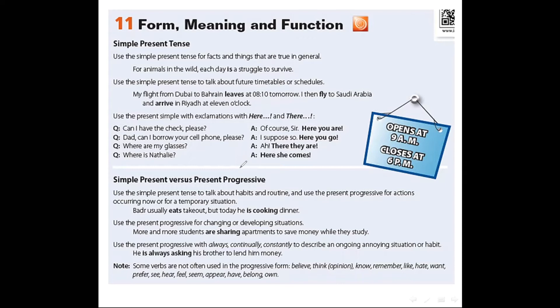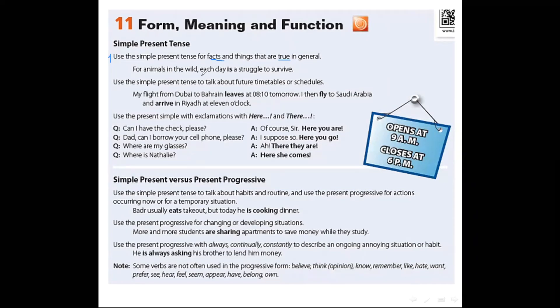Let's start with simple present tense. We use simple present tense for facts and things that are true in general. This is the first use of the simple present tense for facts or real or true in general. For example, for animals in the wild each day is a struggle to survive. Here we use the simple present tense for verb to be because it's true.